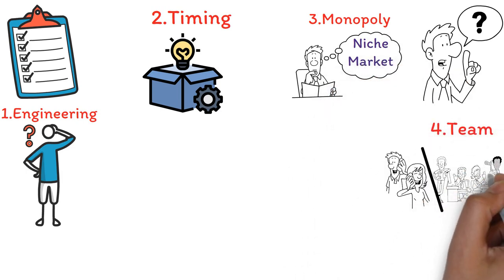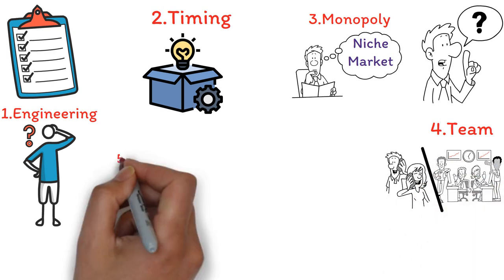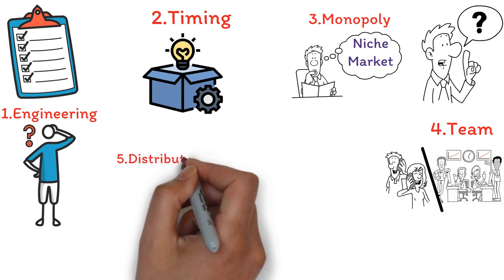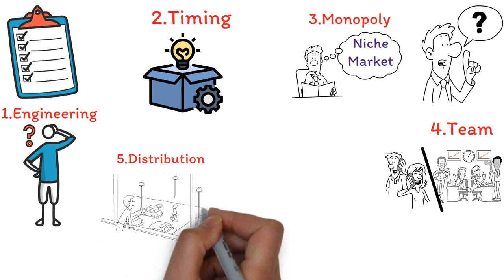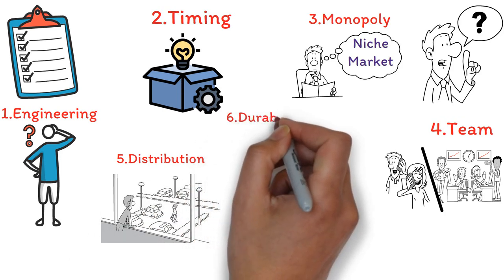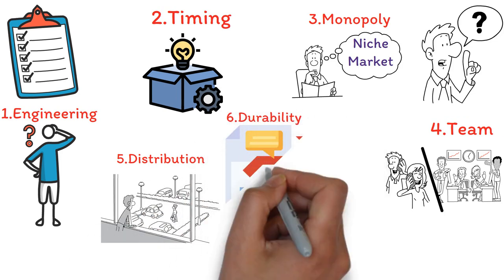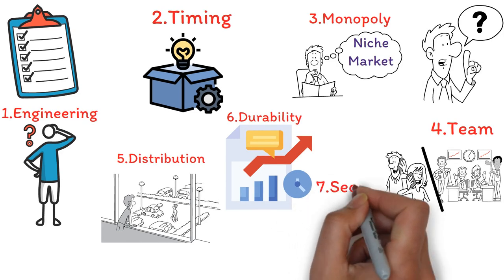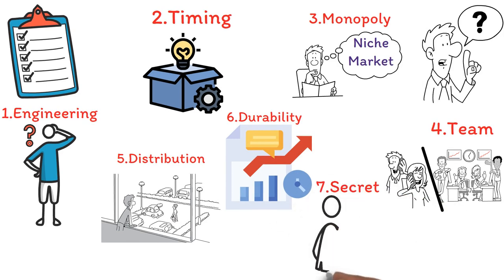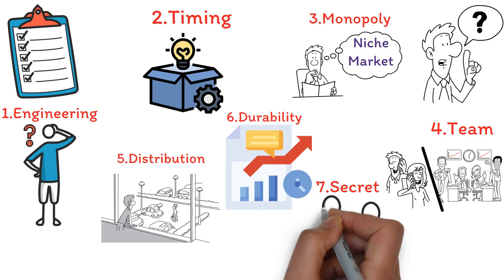Five, distribution. Do you have a strategy to reach your customers? Six, durability. Can you maintain your market position in the long run? Seven, secret. Have you identified a unique, overlooked opportunity?